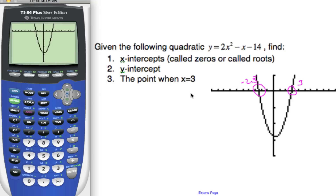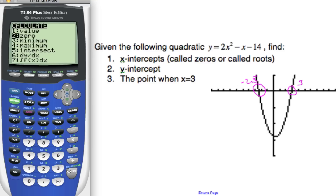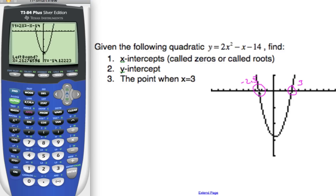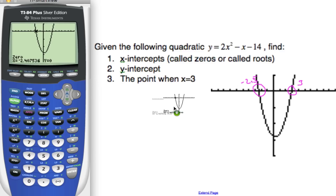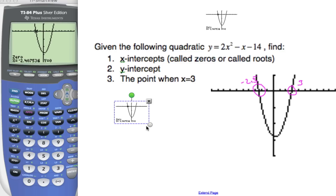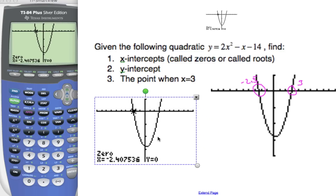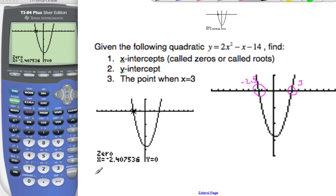So I'll do the negative 2.5 one first. I go back to my calculate menu, which is second trace, and I'm going to do a zero. Now it asks me for the left bound — I have to tell the calculator to be to the left of this particular point, so I'll put in negative 5. And for the right bound, I can't be so far right that it captures both x-intercepts, so I'll put it in the middle at 0. My guess is negative 2.5. Hit enter — and here's my first x-intercept: negative 2.407536. So to three significant figures, I get negative 2.41.